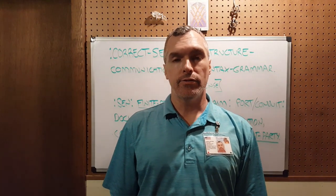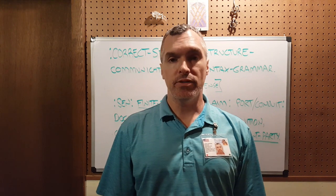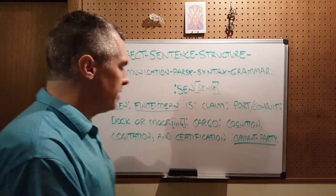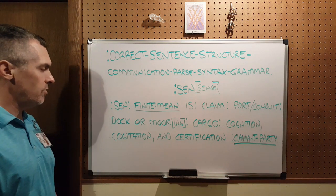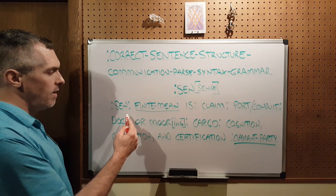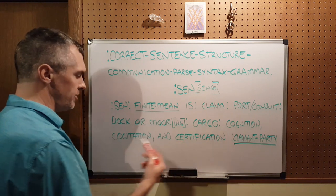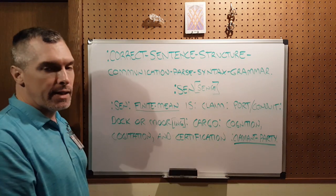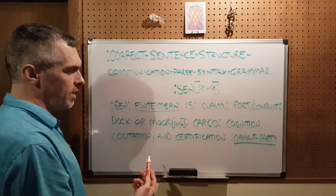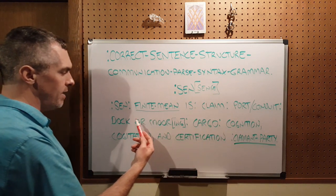Before I go any further, I would also like to announce that this salvage claim is open source, which means it's open to the public to use as they wish. Now I would like to give an explanation for my finite mean for my salvage claim on the word S-E-N. My finite mean is: for the send of the finite mean is with this claim of the port conduit of the dock or more with the cargo of the cognition, cogitation, and certification by a claimant party. Backwards: for a claimant party of the cognition, cogitation, and certification is with the cargo of the dock or more with the port conduit of this claim with the finite mean by the send.